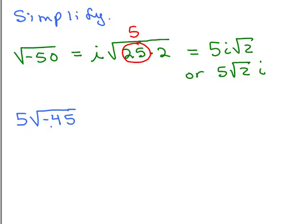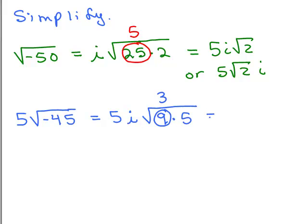Here's another one to try: 5 times square root of negative 45. Put the video on pause and try that one. First we deal with the negative sign under the square root — keep the 5 and write square root of 45 times i. Now 45 can be written as 9 times 5, a perfect square. Square root of 9 comes out as 3. So we have 5 times 3, which is 15i square root of 5, or 15√5·i. Just be careful not to put the i underneath the square root.